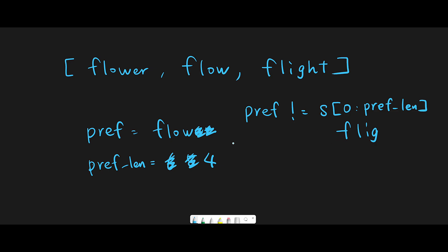Flow and the slice of flight are different, so we make the prefix shorter: length becomes three, prefix is now flo. We check again — still different — so length becomes two and prefix is now fl. From zero to two means zero to one, so fl. Now they are the same, so among these three words the longest common prefix is fl. There is no next word, so we return fl.